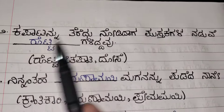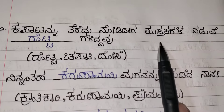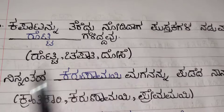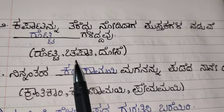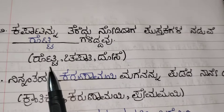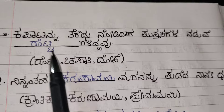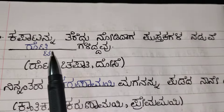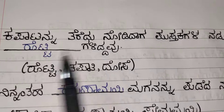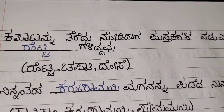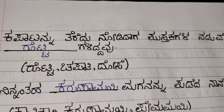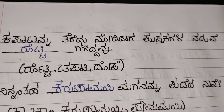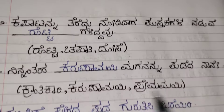Next one: Kapatannu Teredu Noodi Daga Pustakagala Naduwe Dashgalitavu. Options: Rotti, Chapati, Dosa. You need to choose Rotti. Kapatannu Teredu Noodi Daga Pustakagala Naduwe Rottigalitavu. That means when the mother opened the cupboard, what did she find? She found rotis right in between the books.